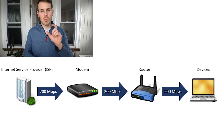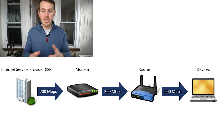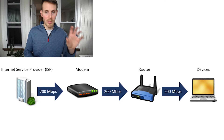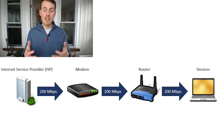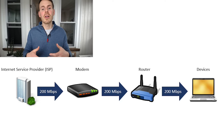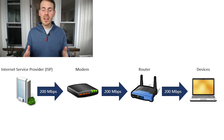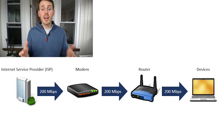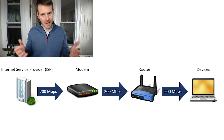If an internet plan is providing a maximum internet speed of 200 megabits per second, you need to make sure that your modem and router both can support at least 200 megabits per second. If you're not sure, you can look up the make and model of both your modem and your router and check their specifications to ensure they support speeds greater than 200 megabits per second. The only other component you need to worry about is your ethernet cables — make sure those can support the internet speed provided by your internet plan as well.